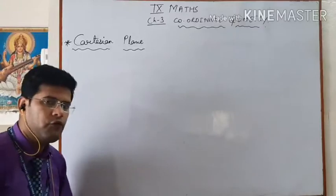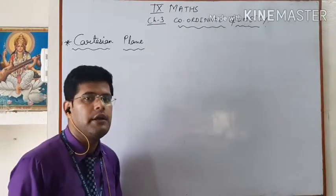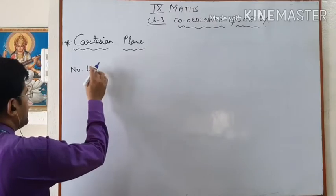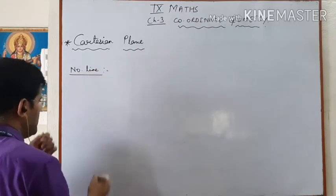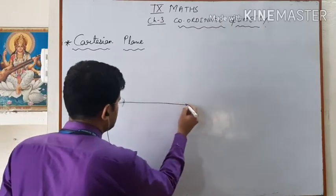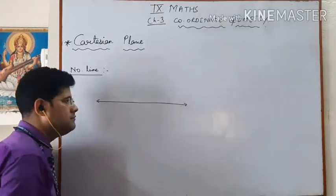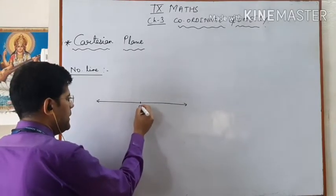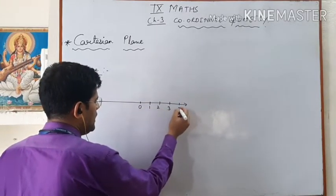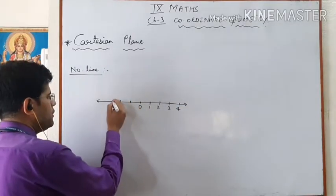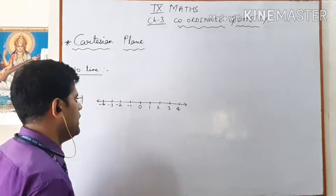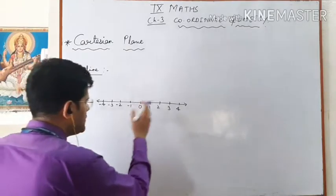Before starting this, I want to recall your previous information about the number line. You have studied the number line in your previous class as well as in Chapter 1. In a number line, we have a line with a midpoint at 0. On the right hand we put all the positive numbers, and on the left hand we put all the negative numbers. Zero separates the positive and negative numbers.